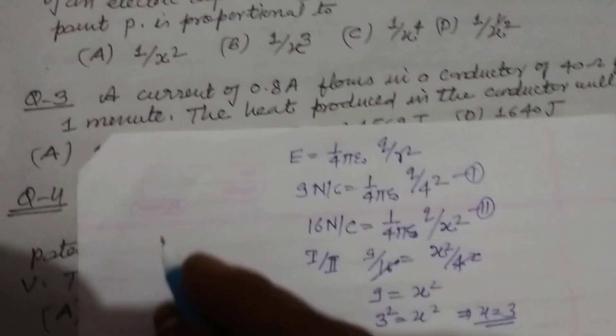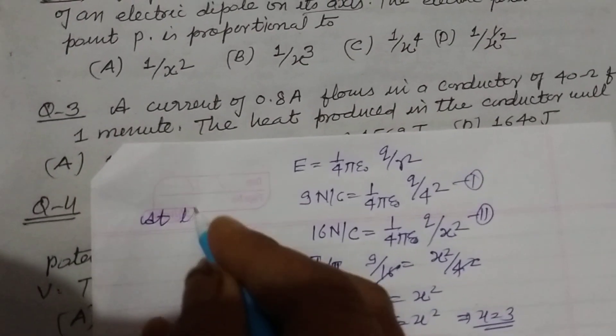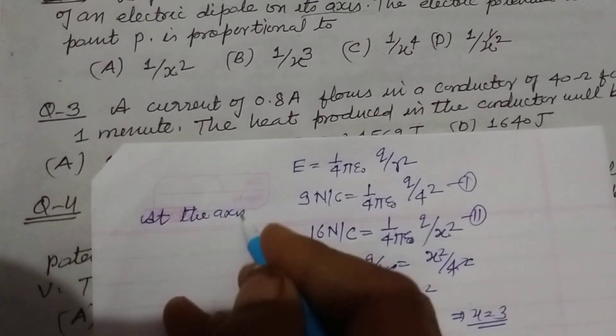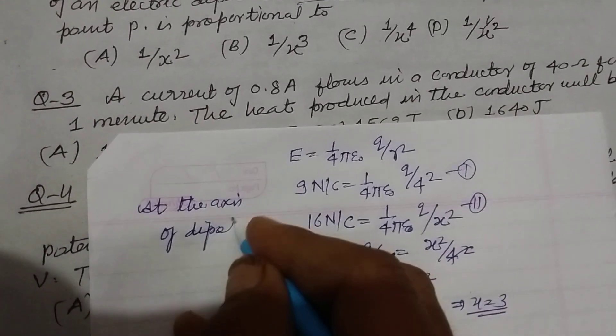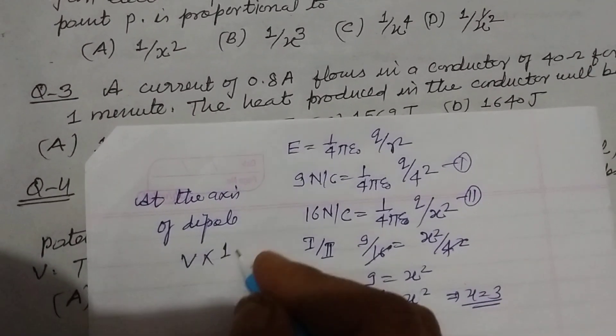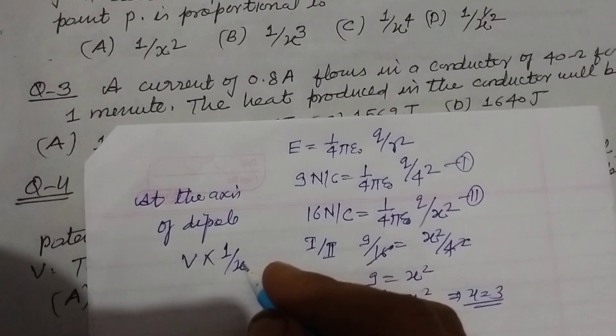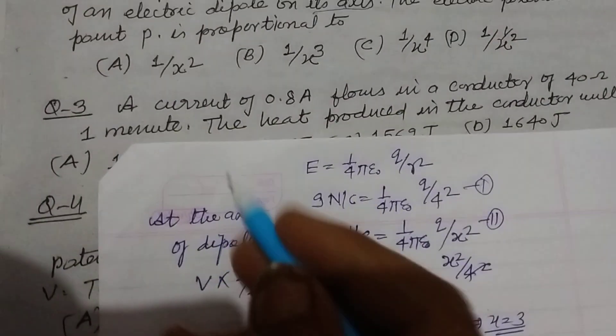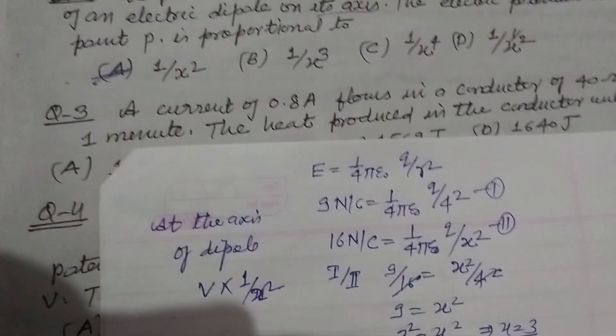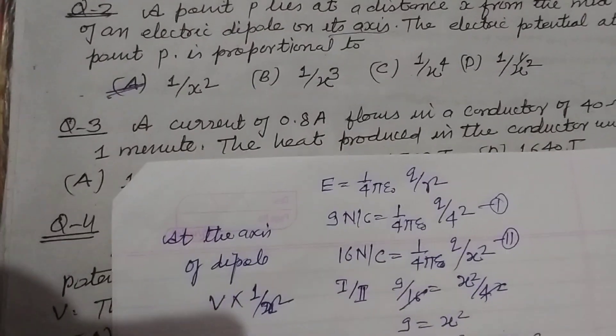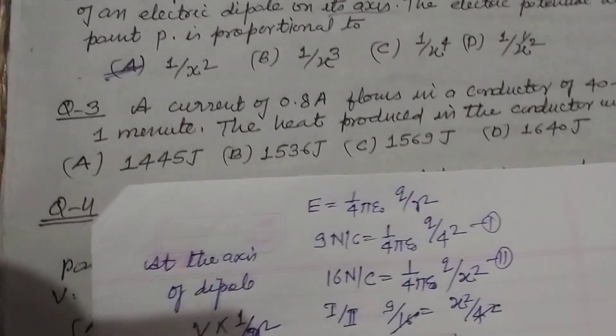And you know that at point x at the axis of dipole, V is directly proportional to 1 upon R². Here R is given x, therefore the relation A is correct, which is V is directly proportional to 1 upon x².